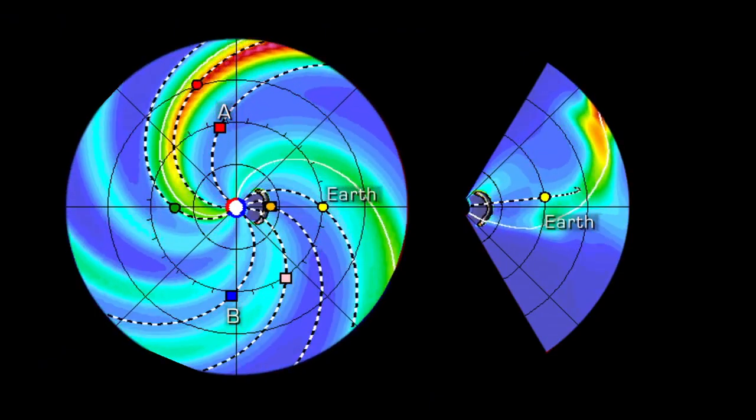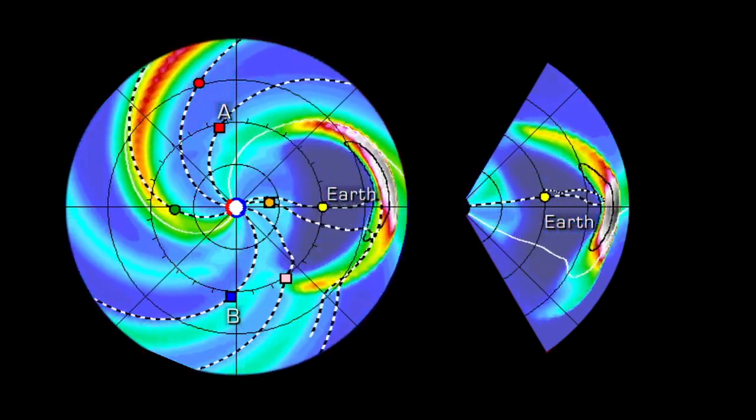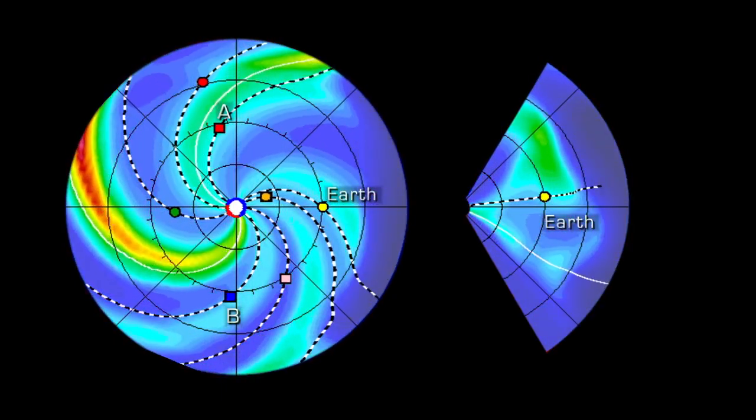We hope that it's going to allow us to improve our models so that we can put the right physics in it and actually make predictions about where and when reconnection is going to happen. This will help us make our space weather models more predictively powerful.